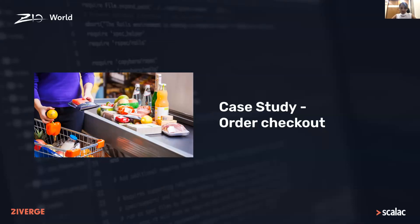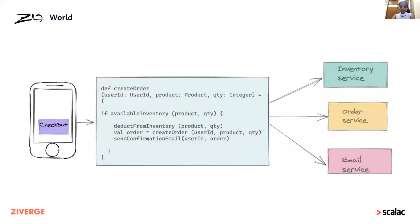Let's consider a scenario where a user checks out a product — a simplified version where the user is checking out a single product. This is a standard microservice-based architecture where we have the inventory service, order, and email service. The logic is straightforward: it checks if the item is available in the inventory; if it is, it deducts the item, creates an order, and sends a confirmation email to the user. Everything looks good so far — unless something goes wrong.